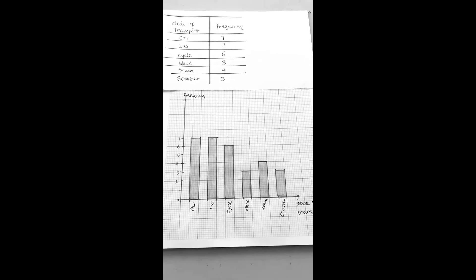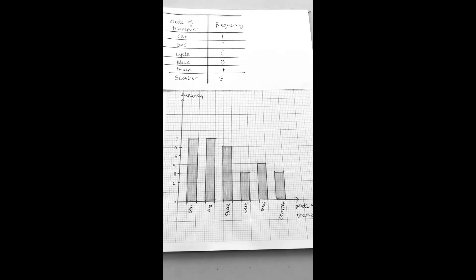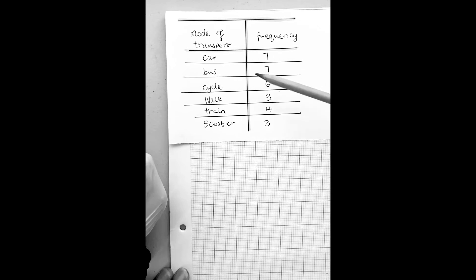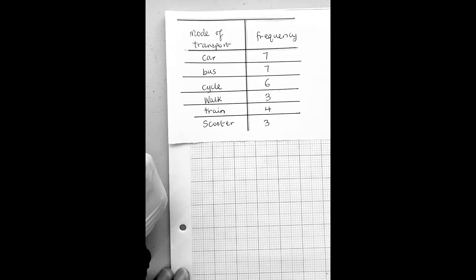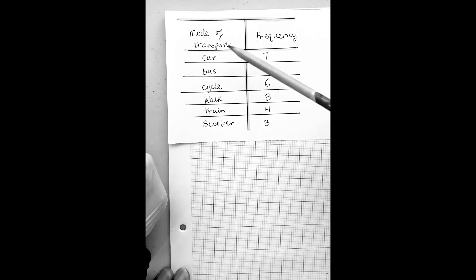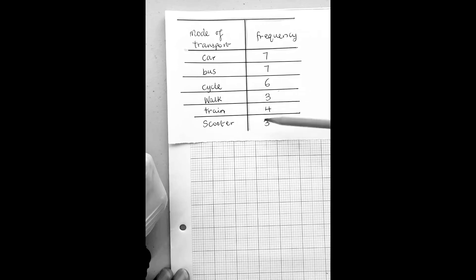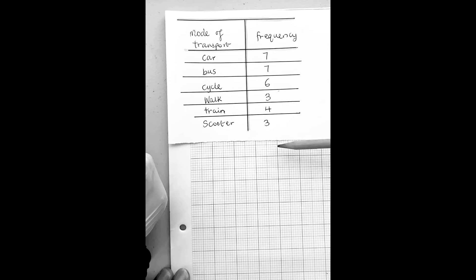Let's jump straight in. For instance, you have a frequency table like this showing the different modes of transport that people take to school - car, bus, cycle, walk, train, scooter - different ways that people come to school, with the frequencies written on the side.